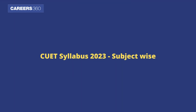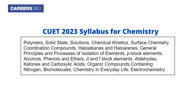CUET 2023 syllabus for chemistry includes: polymers, solid state, solutions, chemical kinetics, surface chemistry, coordination compounds, haloalkanes and haloarenes, general principles and processes of isolation of elements, P-block elements, alcohols, phenols and ethers, D and F-block elements, aldehydes, ketones and carboxylic acids, organic compounds containing nitrogen, biomolecules, chemistry in everyday life, and electrochemistry.